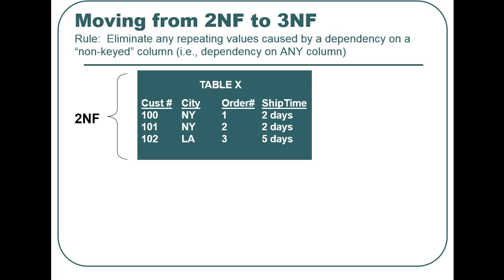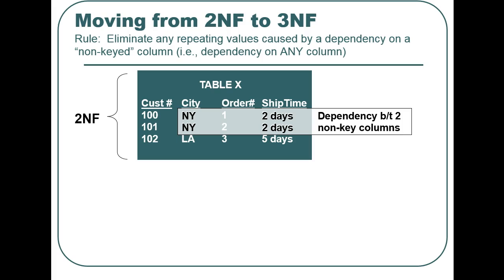To move to the third normal form, we continue to eliminate redundant data from our database. In this example, we again have repeating values — each time we ship to New York, the shipping time is two days. However, the repeating values are not dependent on a primary or foreign key column. The rule for third normal form says that we cannot have repeating values that are linked to any other columns in our table.